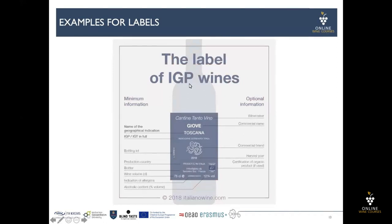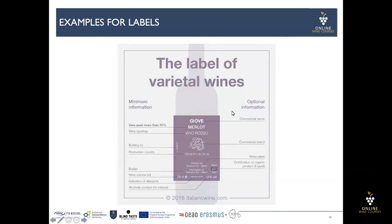For another denomination of quality, such as PGI wines, we have the minimum information and optional information, including indication of organic product. And for the level of varietal wines, we have different requirements.